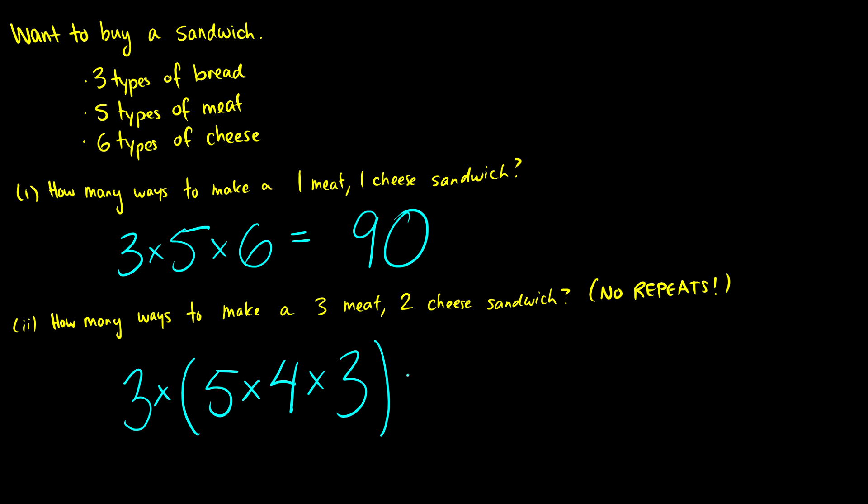Okay, and then we want to multiply this by a two cheese sandwich. So we have six choices for our first cheese and five choices for our second cheese.